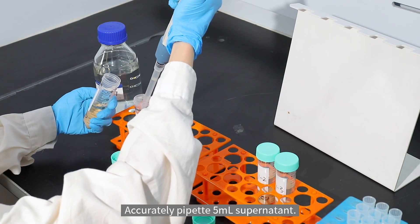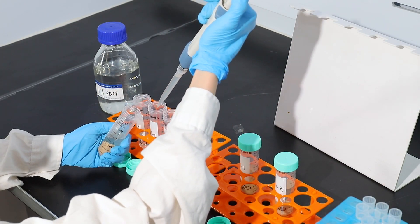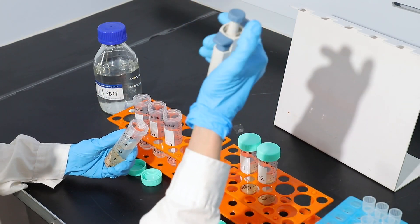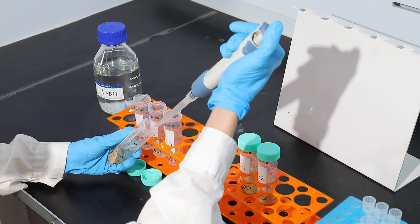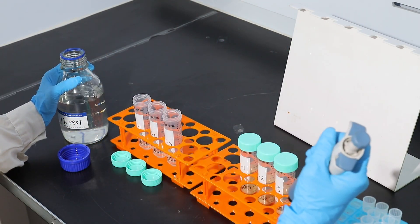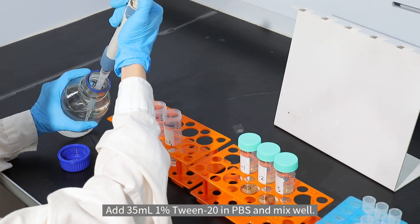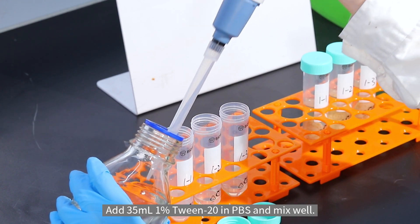Accurately pipette 5ml supernatant. Add 35ml 1% tween 20 in PBS and mix well.